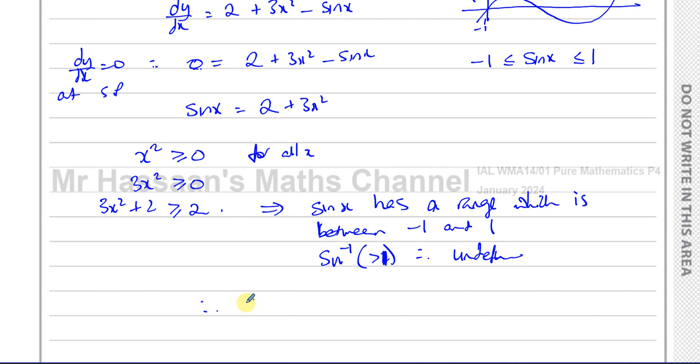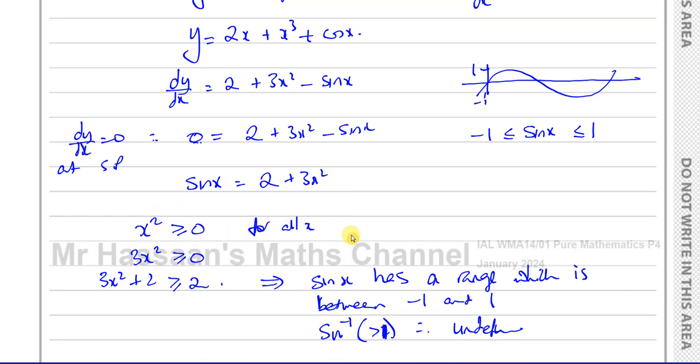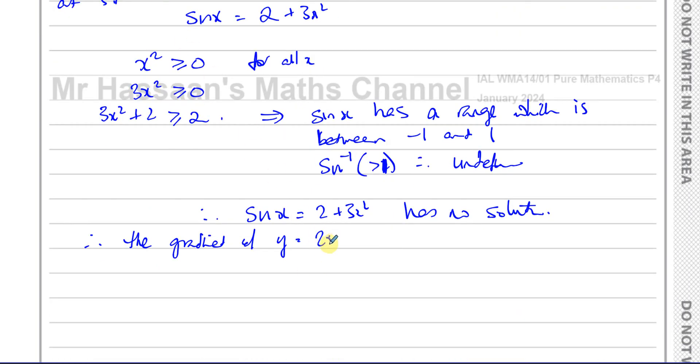Therefore sine x equals 2 plus 3x squared has no solution, which means that the gradient of y equals 2x plus x cubed plus cosine x can never equal zero.